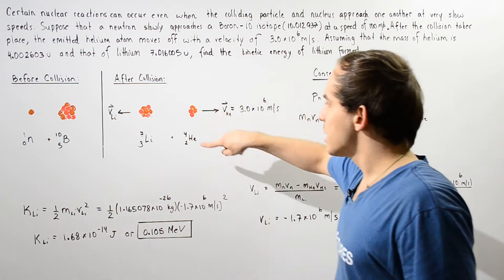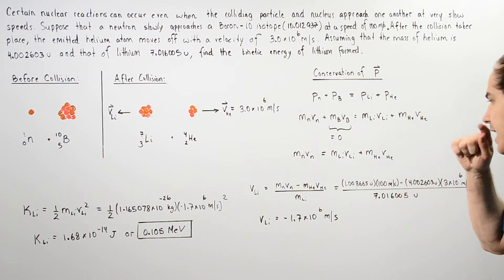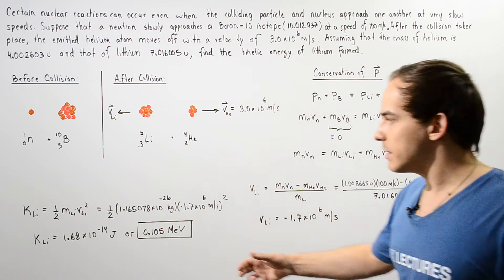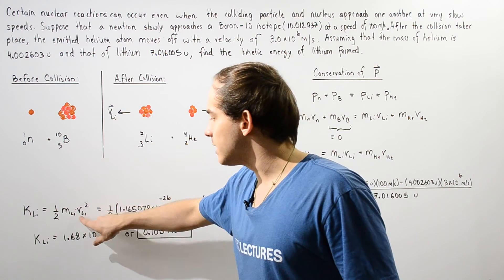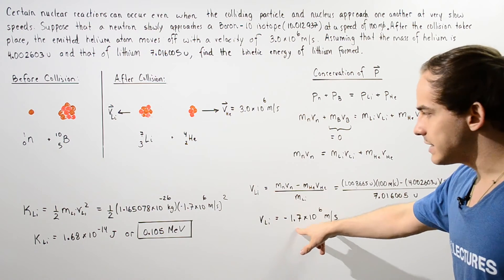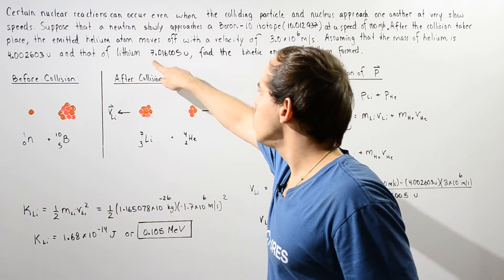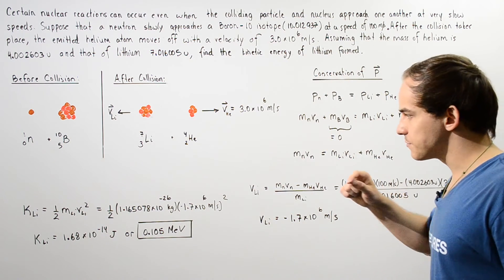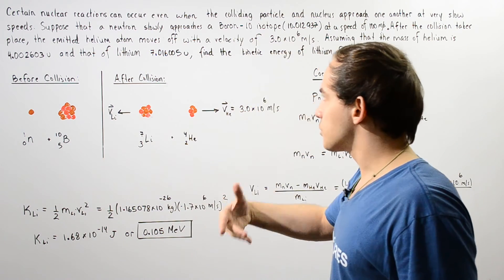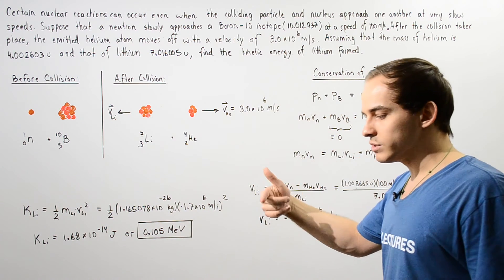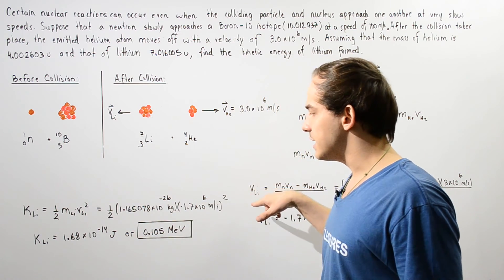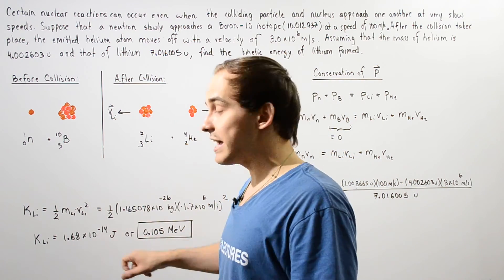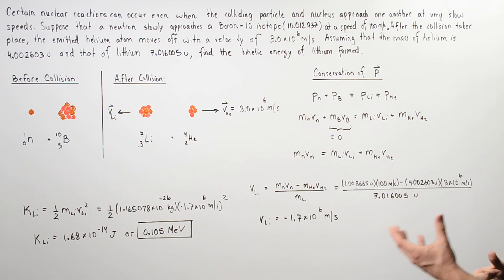The negative sign simply indicates that the lithium moves in the negative direction along the x-axis. To find the kinetic energy, we apply the non-relativistic kinetic energy formula: one-half times the mass of lithium multiplied by the velocity of lithium squared. We plug in the velocity and convert the mass from unified atomic mass units to kilograms using the conversion factor 1.6606 times 10 to the negative 27 kilograms per u. Multiplying these together and taking one-half, we get a result in joules, which converts to approximately 0.105 mega electron volts.